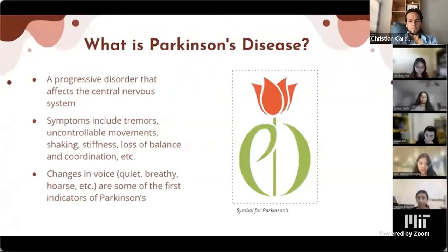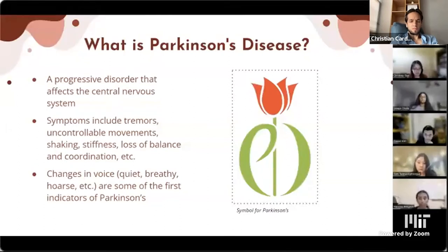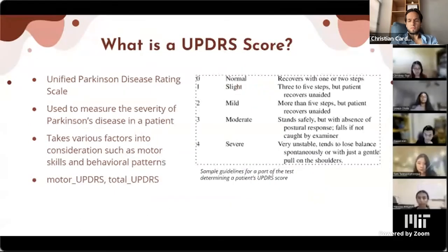For performance metrics: R-squared scores the proportion of variance in predictions predictable from input features; mean absolute error is the average distance between predicted and actual output; mean squared error is the average of squared errors. Models we tried: linear regression, random forest, neural network, SVR, and k-nearest neighbors.